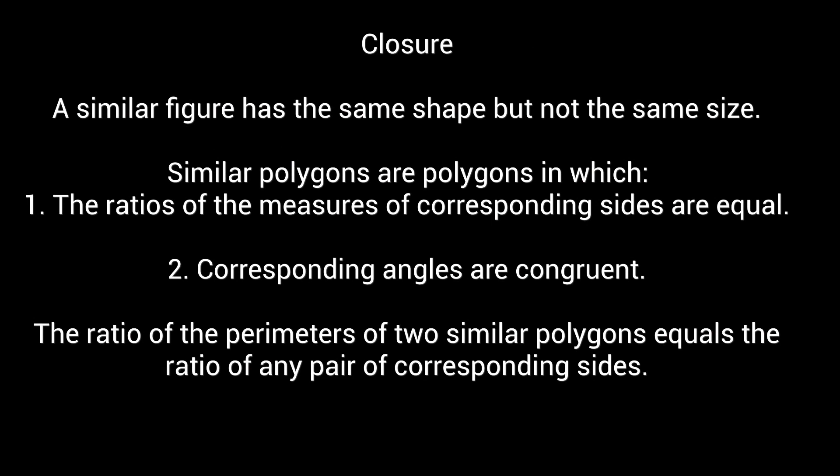In today's lesson we learned, a similar figure has the same shape but not the same size. Similar polygons are polygons in which the ratios of the measures of corresponding sides are equal and corresponding angles are congruent. And the ratios of the perimeters of two similar polygons equals the ratio of any pair of corresponding sides. That's a wrap on today's video. We'll see you in the next one.